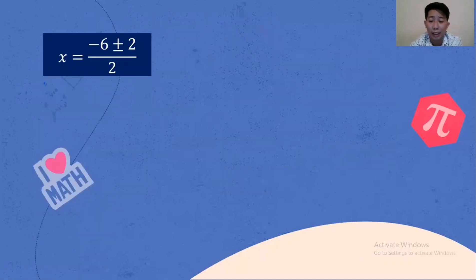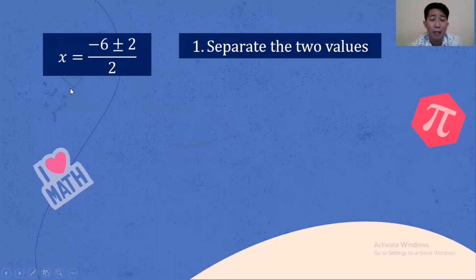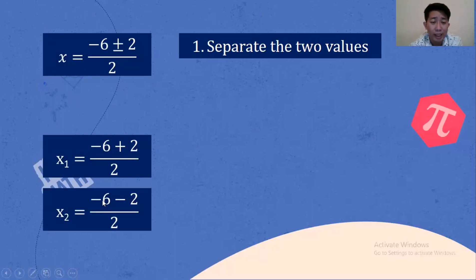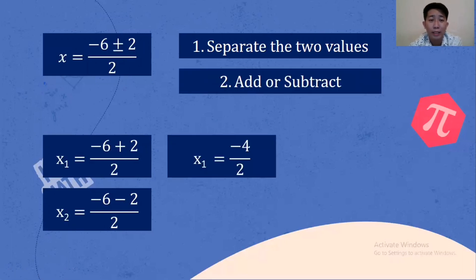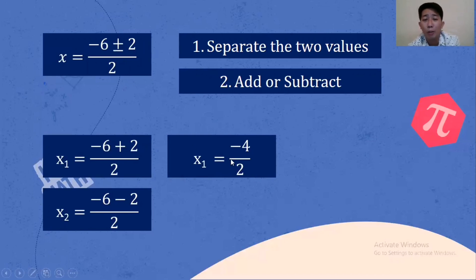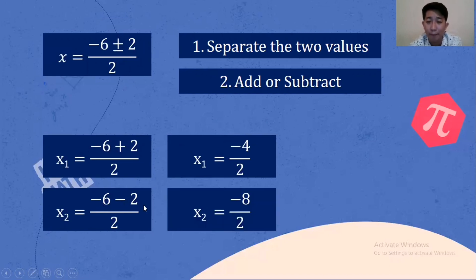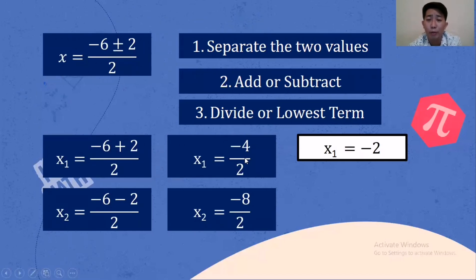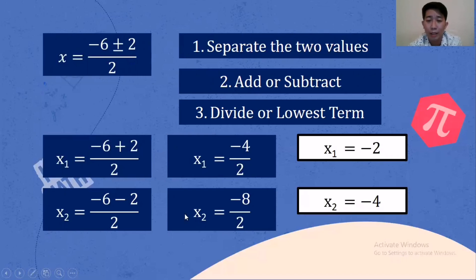We move on to the next process, separating the two values for X sub 1 and X sub 2 because we have plus and minus. Negative 6 plus 2, and negative 6 minus 2. Based on the rules of integers with unlike signs, negative 6 plus 2 is negative 4, and negative 6 minus 2 is negative 8 over 2. Dividing: negative 4 over 2 is negative 2, and negative 8 over 2 is negative 4. So the values of X are negative 2 and negative 4.